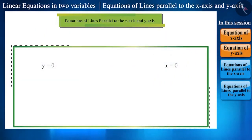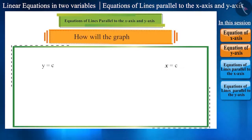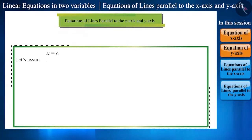Friends, now, how will the graph look if instead of y = 0 and x = 0, it was y = c and x = c, that means a constant term or any number?